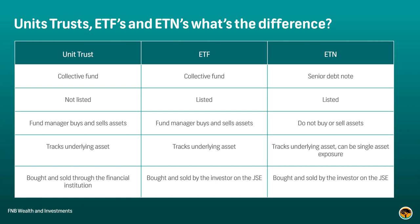Unit trusts are probably one of the most familiar types of asset classes for obtaining offshore exposure locally. A unit trust is a collective fund, a collective investment scheme — a pooling of investors' funds for a fund manager to go and select assets based on that specific unit trust fund mandate. It's not a listed instrument, so you cannot buy and sell a unit trust on the JSE. You need to purchase it through the financial institution that put it together. The fund manager buys and sells the different assets ticking the fund mandate. As an investor, by buying a unit of that specific unit trust, you gain exposure to all of those assets within it — a nice basket offering through a single investment.